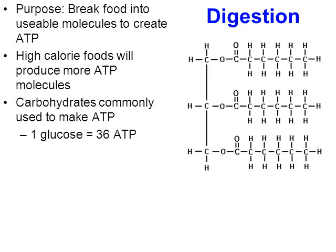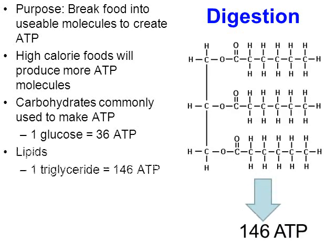It's even more when you look at a lipid. Here's a triglyceride — triglycerides are three fatty acids connected to a glycerol head. One triglyceride can yield up to 146 ATP molecules, so we get a lot more ATP from fats. That doesn't mean we should eat a lot of fats, because if our body produces more ATP than can be used, the excess energy will be stored in the form of fat.